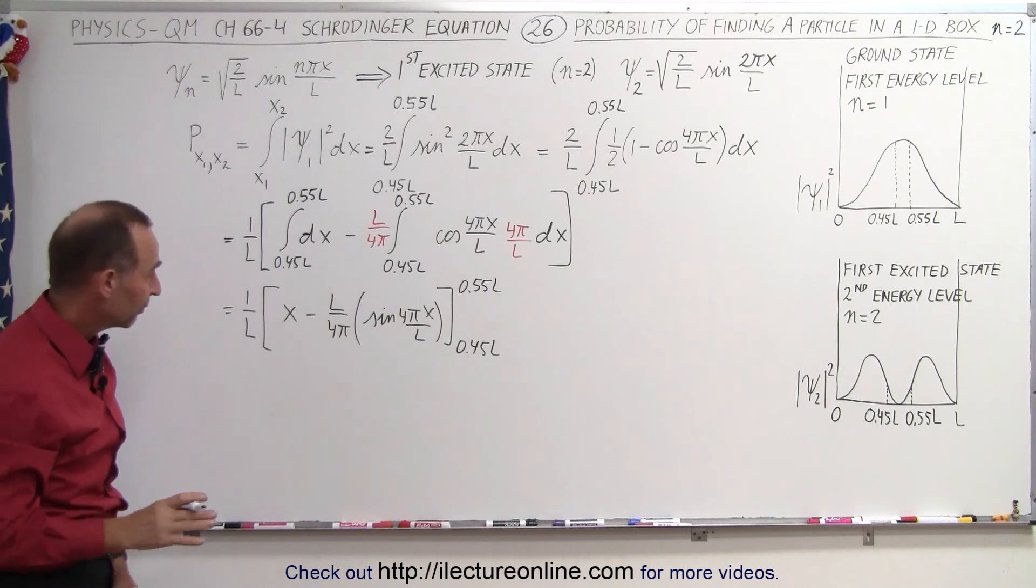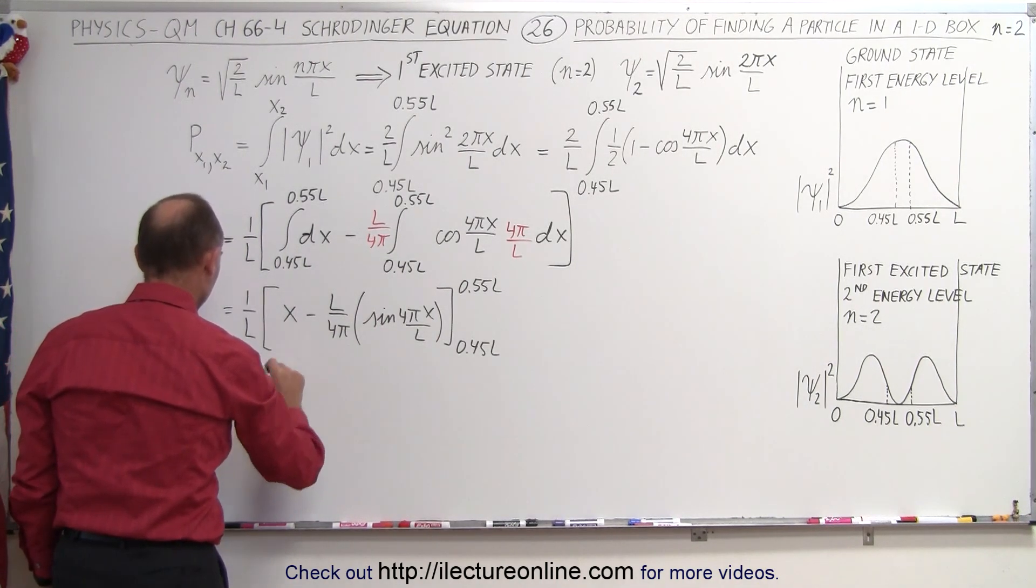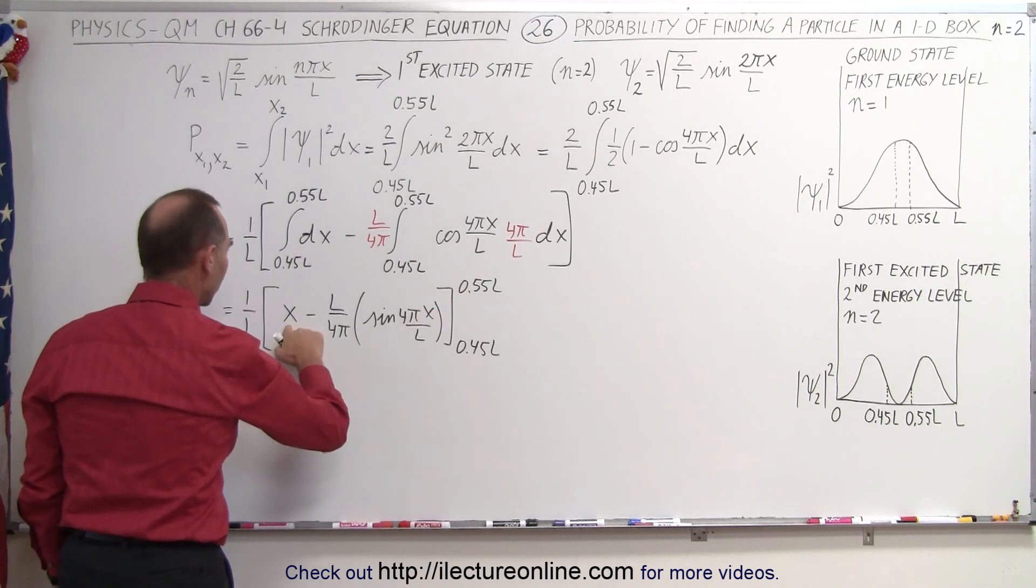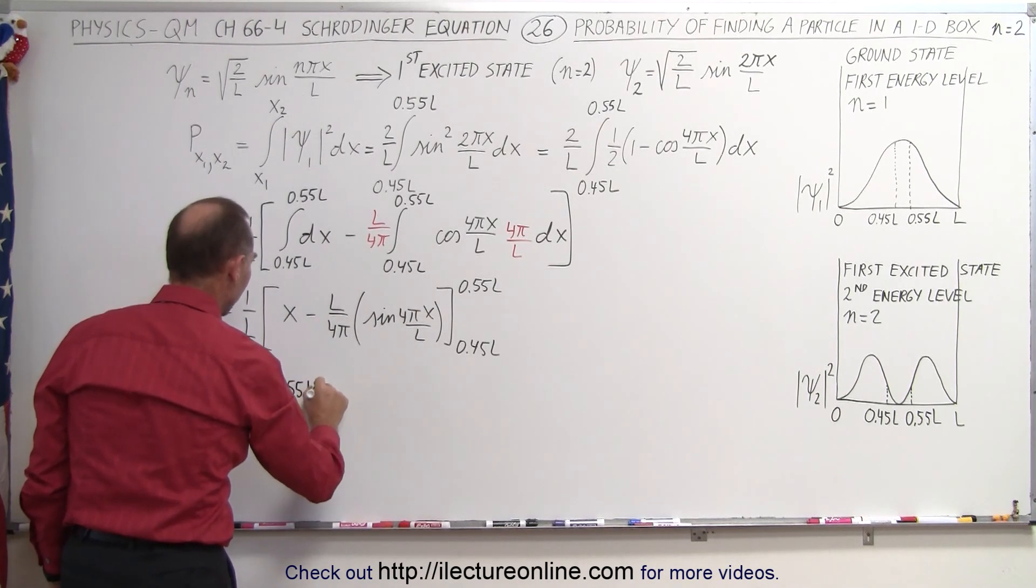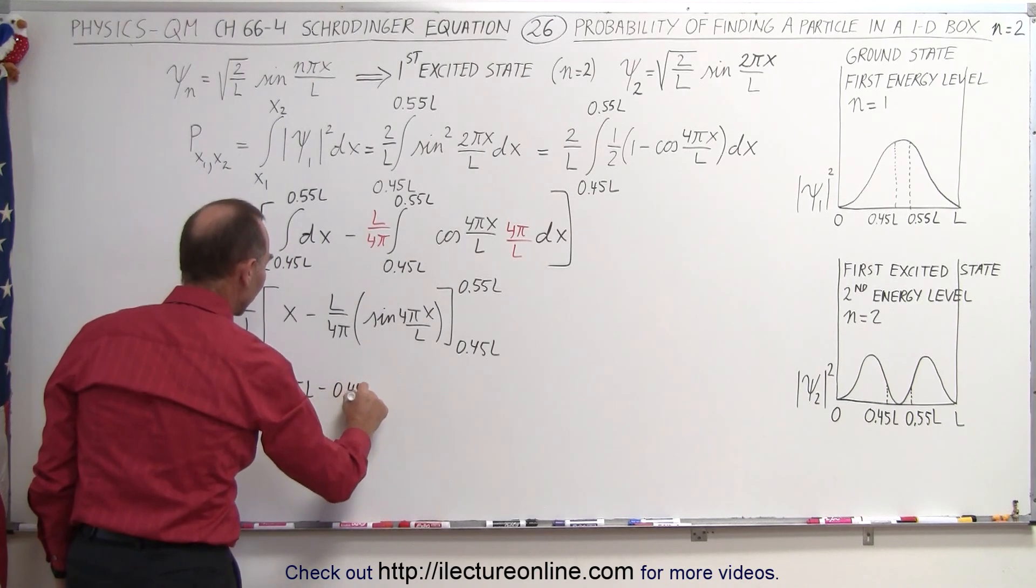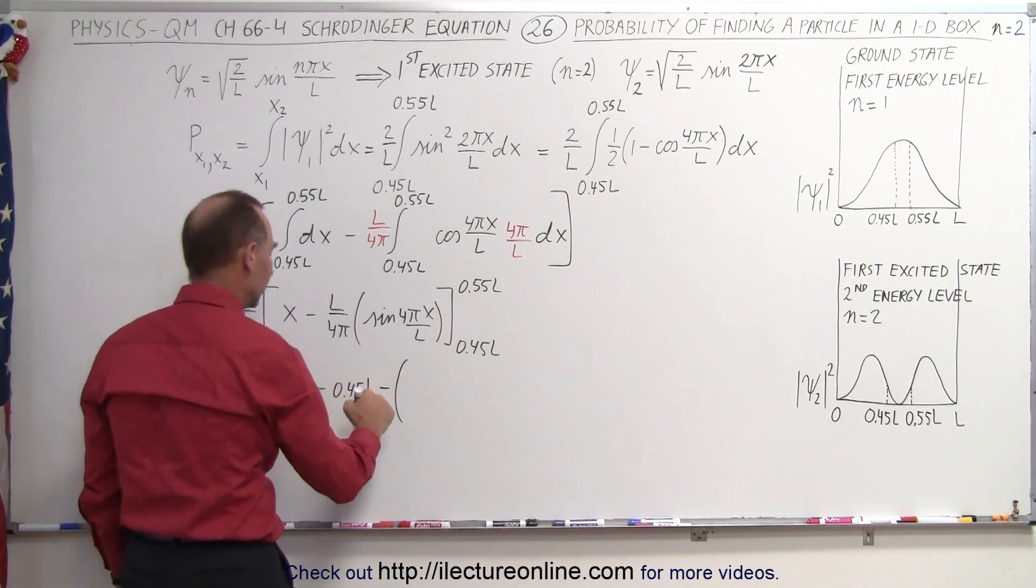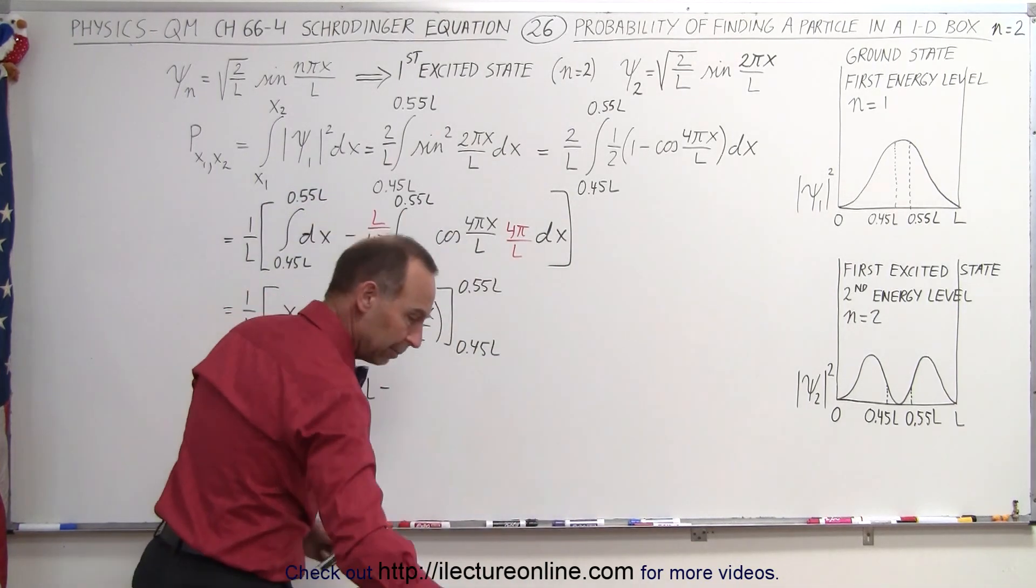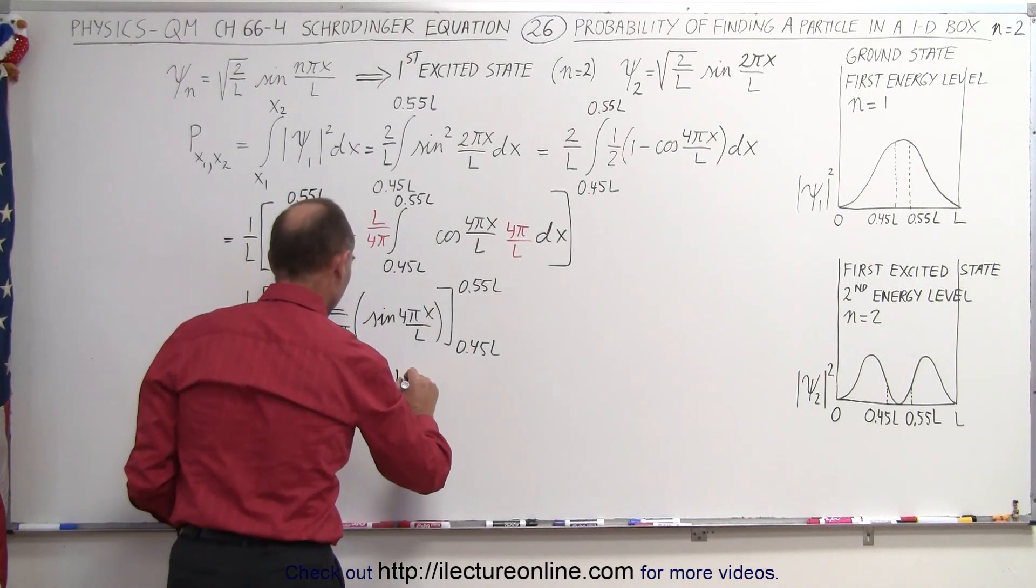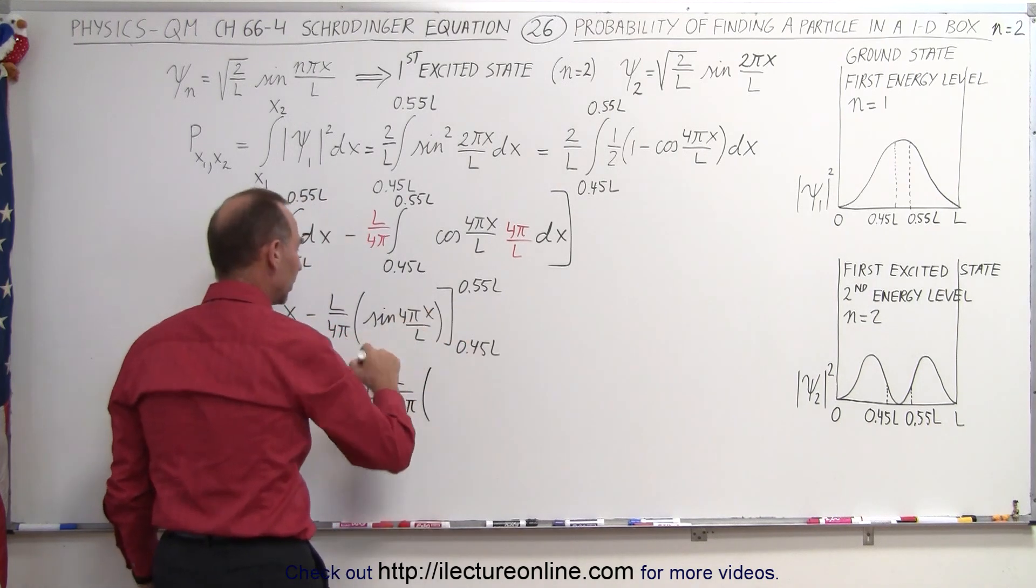If we plug in those limits of integration we get the next following thing. This is 1 over L times, here we can plug in the upper and the lower limits so we get 0.55L minus 0.45L and then minus here when we plug in the upper limit. I think I want to factor out the L over 4π. It makes it a little bit cleaner. So L over 4π times, when I plug in the upper limit,